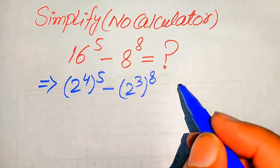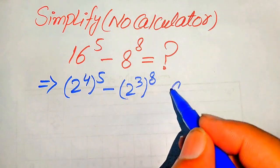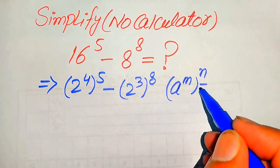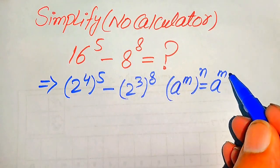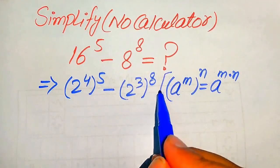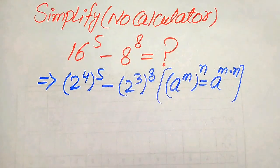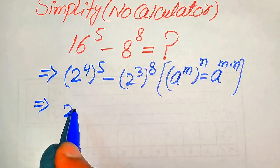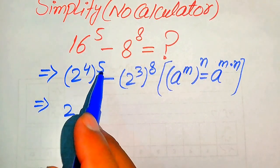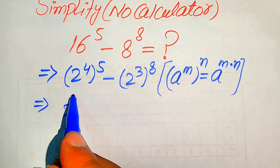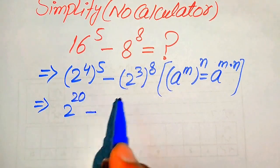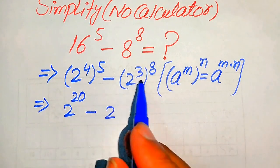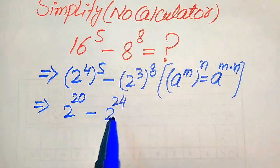Further in the next step we need to use this exponent law: if we have a to the power of m to the power of n, it equals a to the power of m multiplied by n. According to this law, we multiply the two exponents: 2 to the power of 4 times 5 becomes 20, minus 3 multiplied by 8, which becomes 24.